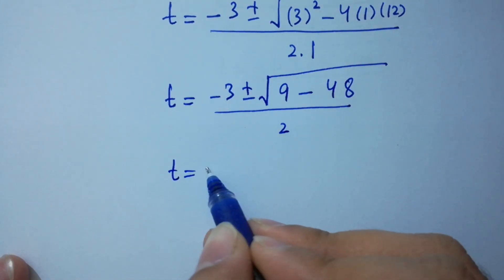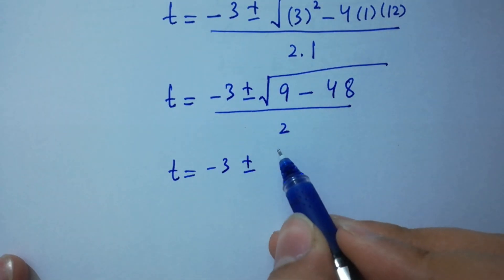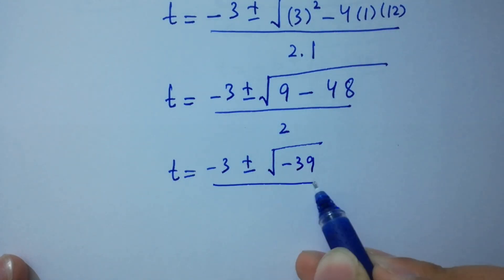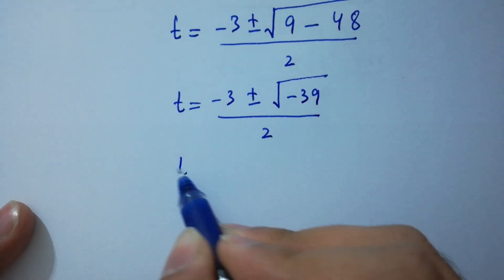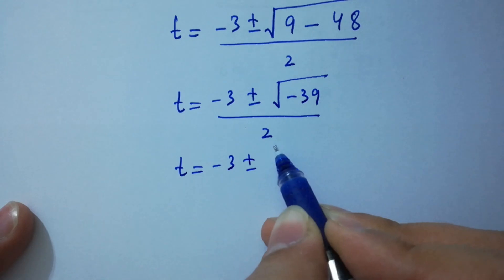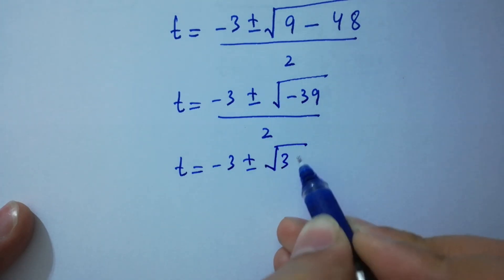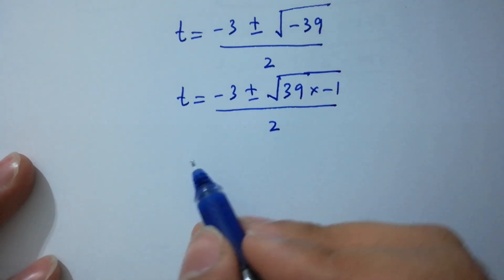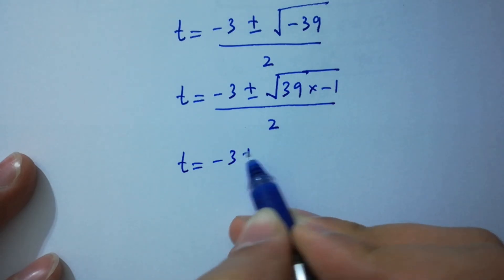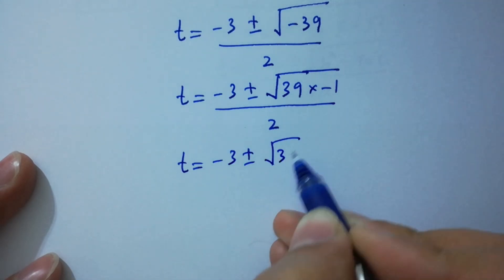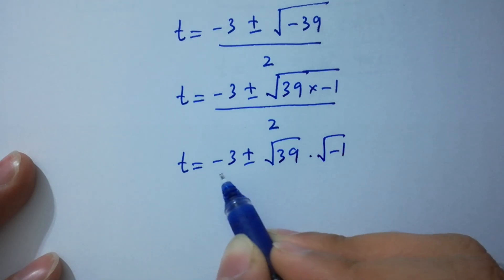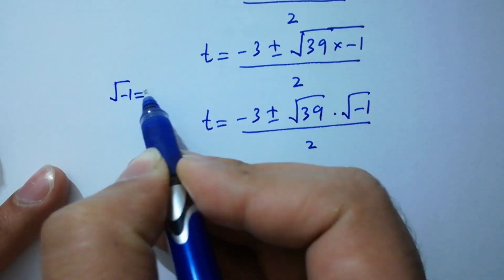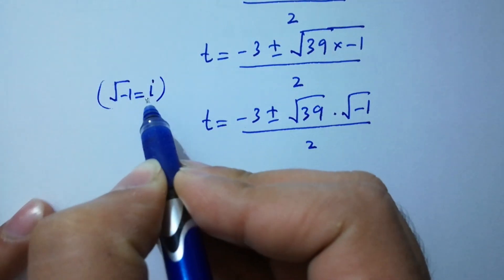t = (-3 ± √(9 - 48)) / 2 = (-3 ± √(-39)) / 2 = (-3 ± √39 × √(-1)) / 2. Since √(-1) = i from complex numbers, this becomes t = (-3 ± i√39) / 2.